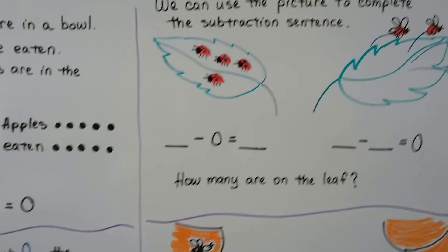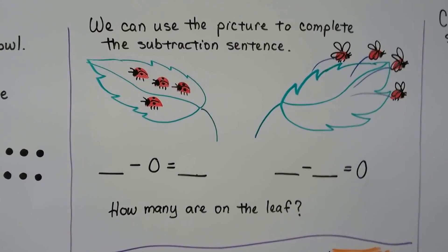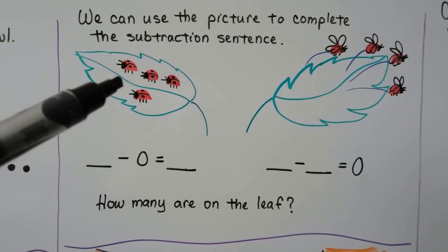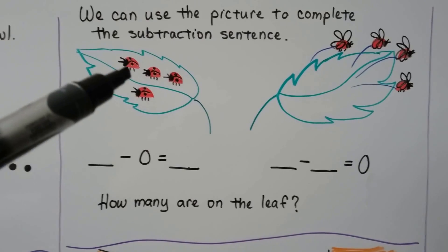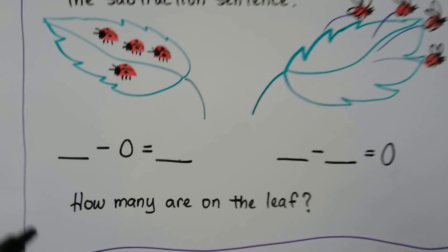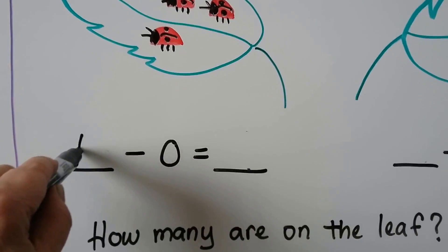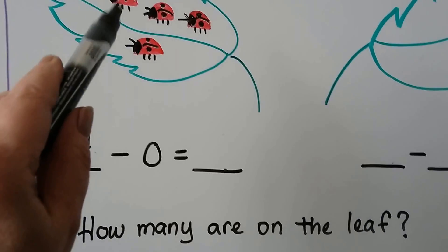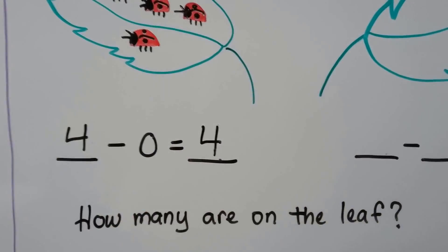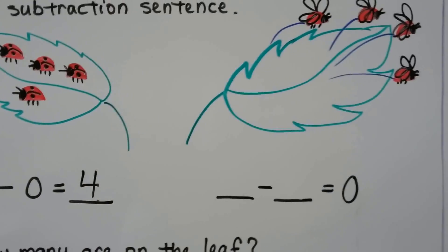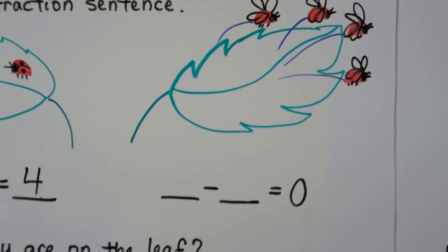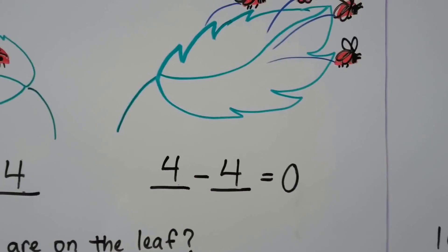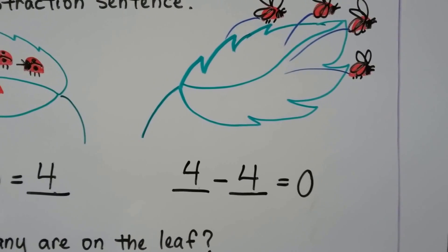We can use the picture to complete the subtraction sentence. Here we have four ladybugs on a leaf. None flew away — zero flew away — so there are still four ladybugs on the leaf. In the next picture, there were four ladybugs and four flew away, so there are zero ladybugs on the leaf.